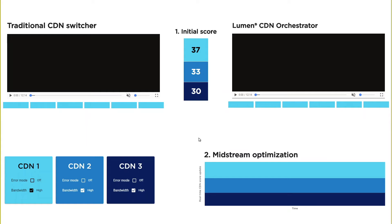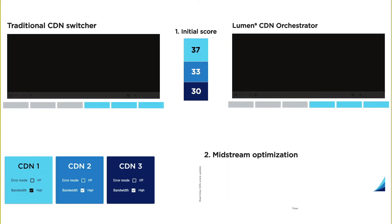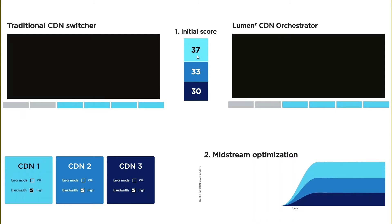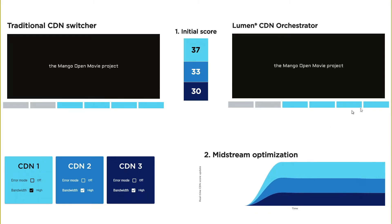The scores are updated based on what the player sees in terms of performance from each CDN: bandwidth, latency, and errors. So let's start a new video session. You see that CDN1 has the highest initial score, so both players will start streaming the video from CDN1, as you can see from the segments filling the buffer.